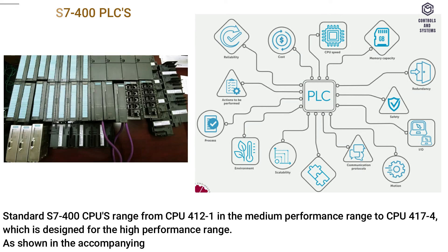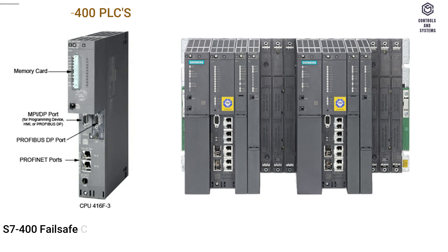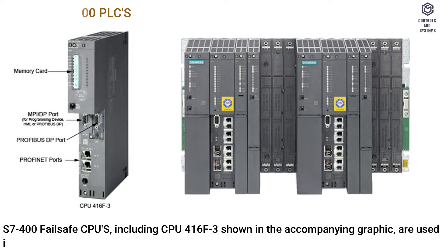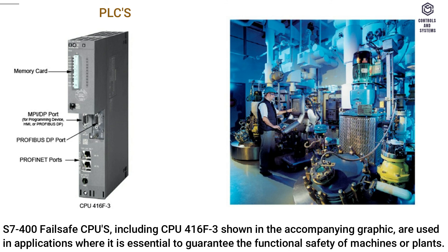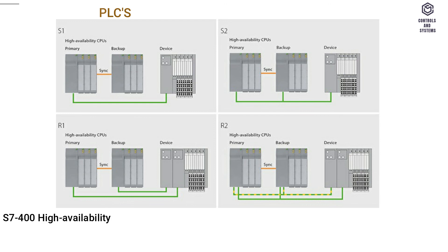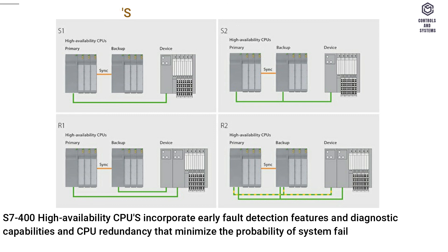As shown in the accompanying graphic, S7-400 CPUs install in a rack along with other modules. S7-400 High Availability CPUs incorporate early fault detection features and diagnostic capabilities and CPU redundancy that minimize the probability of system failures. In the event of a CPU failure, the redundant CPU takes over the process.